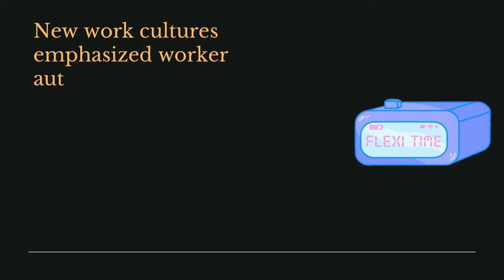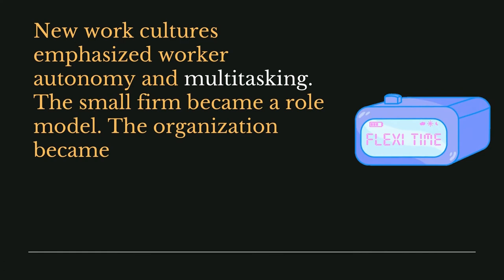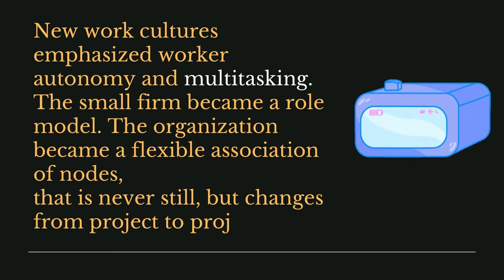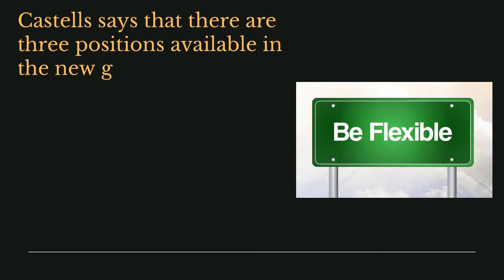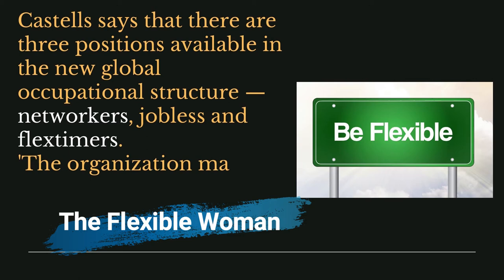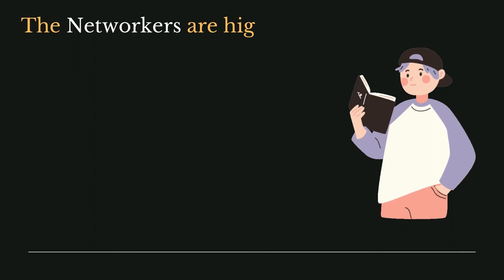In the network society, workers are supposed to be autonomous and good at multitasking. The small firm is a role model of the network society. The organization itself is flexible, never still, but changes from project to project. According to Castells, there are three positions in the occupational structure: networkers, those who are jobless, and flex-timers. Compared to the organization man of the industrial era, the network society is characterized by the flexible woman, where one's job is not permanent and workers move from project to project.